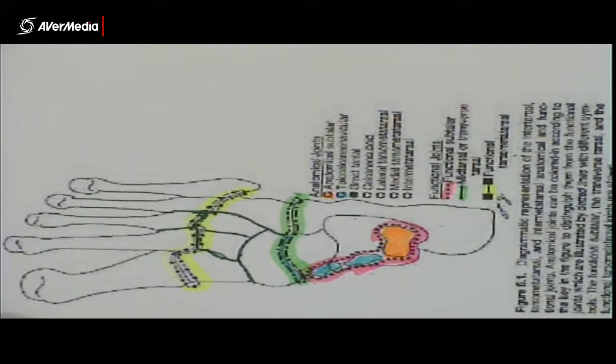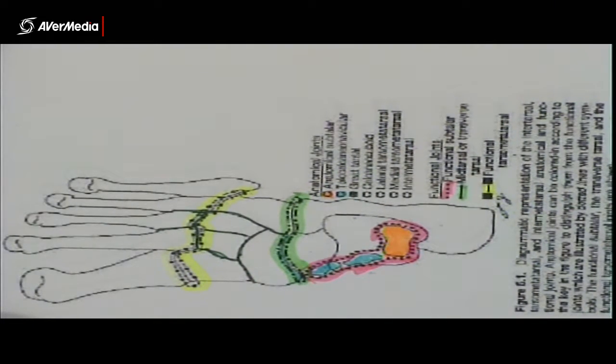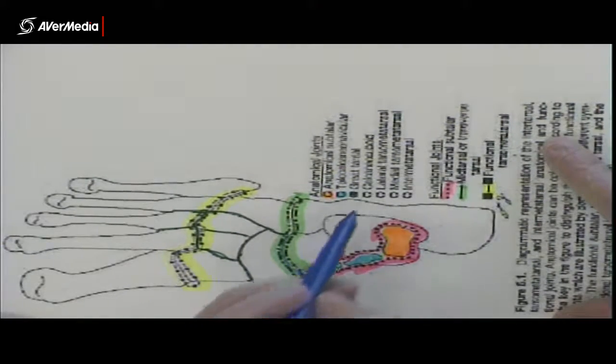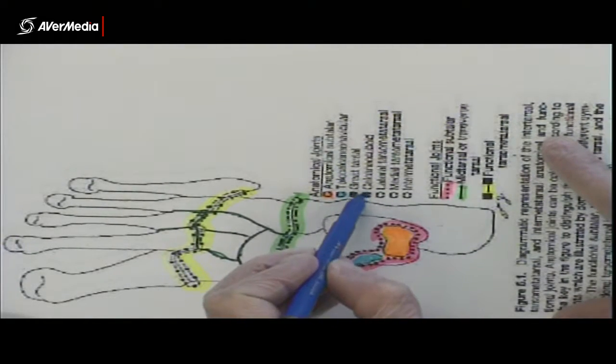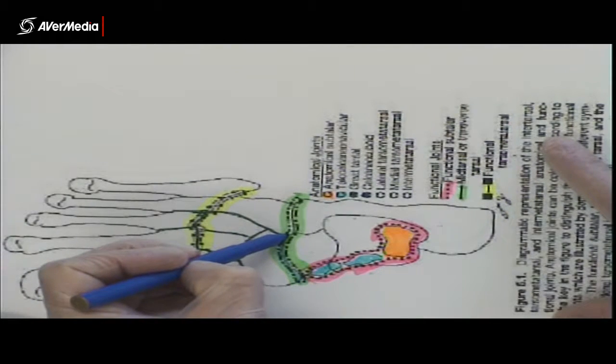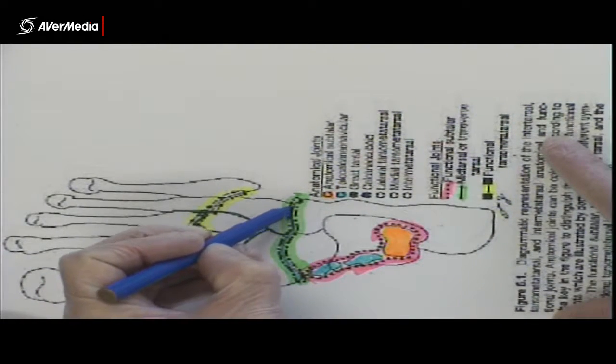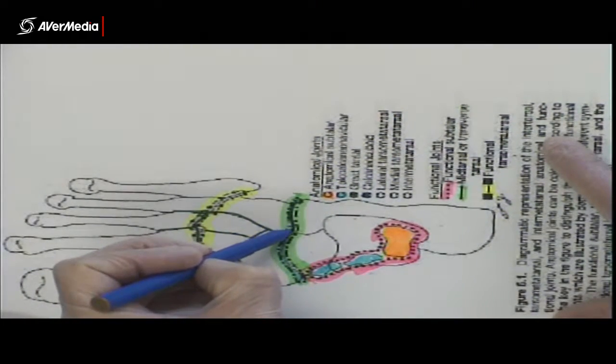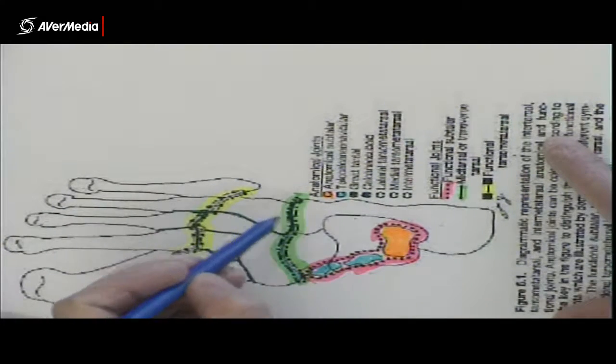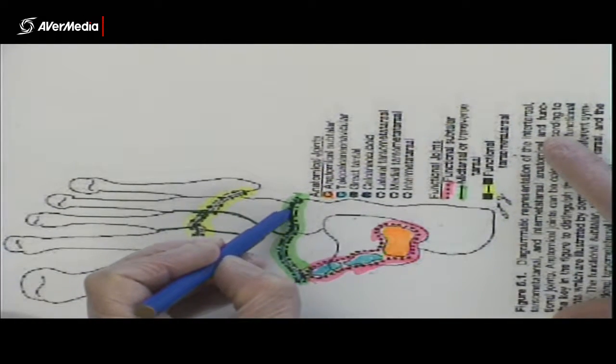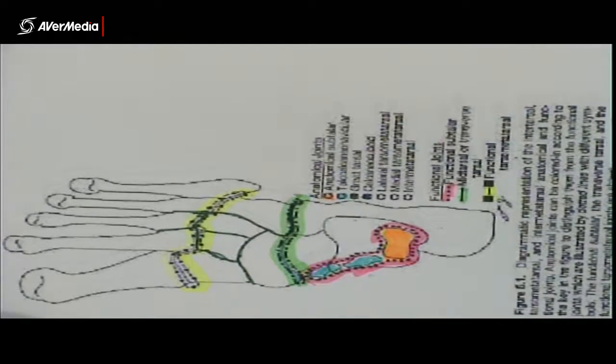Then what we have left are the... Oh, I missed the calcaneo cuboid, or at least I haven't done it yet, sorry. So the calcaneo cuboid joint is, of course, the lateral half of the transverse tarsal. So there's the calcaneo cuboid, just between the calcaneus and the cuboid there. So that's one anatomical joint, one joint capsule.